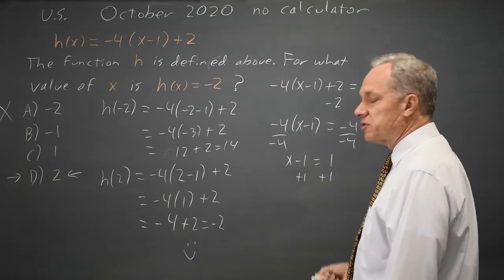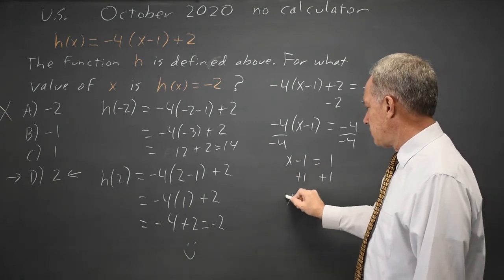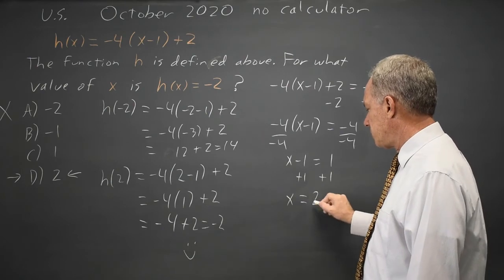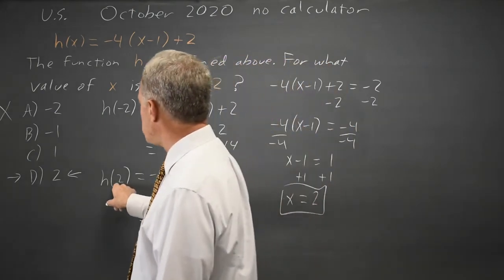I want x by itself, so I'm going to add 1 to both sides because I'm subtracting 1. x, -1+1 is 0 equals 1+1 is 2. Same answer I got by substituting in 2.